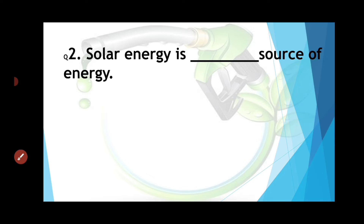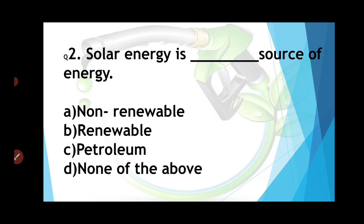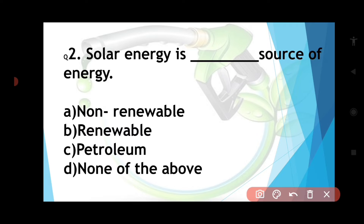Question number two: Solar energy is a source of energy — options are non-renewable, renewable, petroleum, or none of the above. Renewable resources are all natural sources, for example solar energy, air, wind energy, and water. Non-renewable resources are limited and cannot be replaced once used, or they take thousands of years to form, like petroleum products. So the answer is renewable resource — solar energy is a renewable resource.